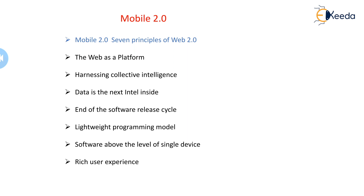Convergence was about integrating emerging types of digital mobile devices such as personal digital assistants, mobile phones, music players, cameras, games, and more into unified platforms.